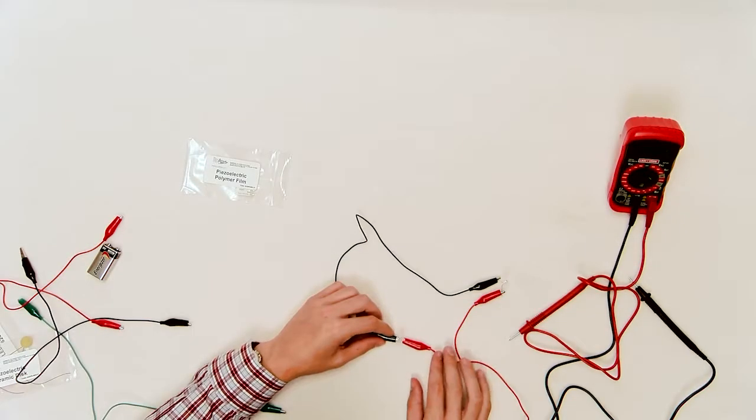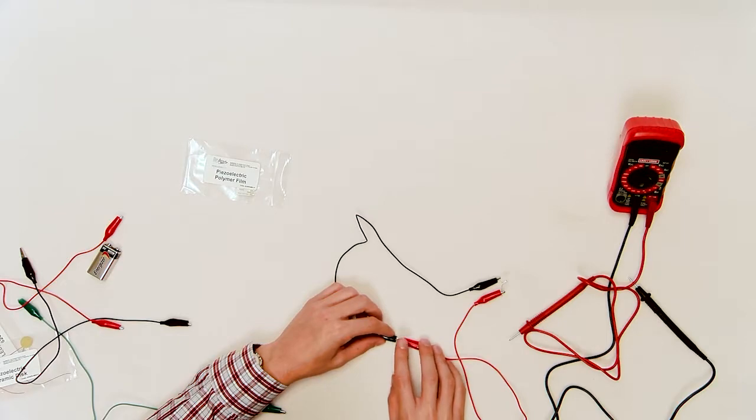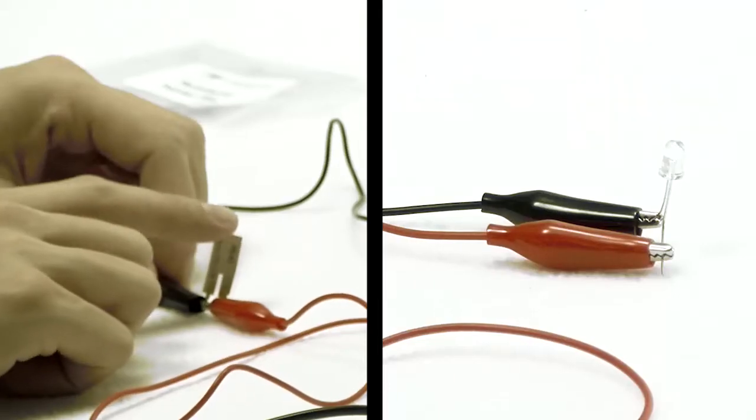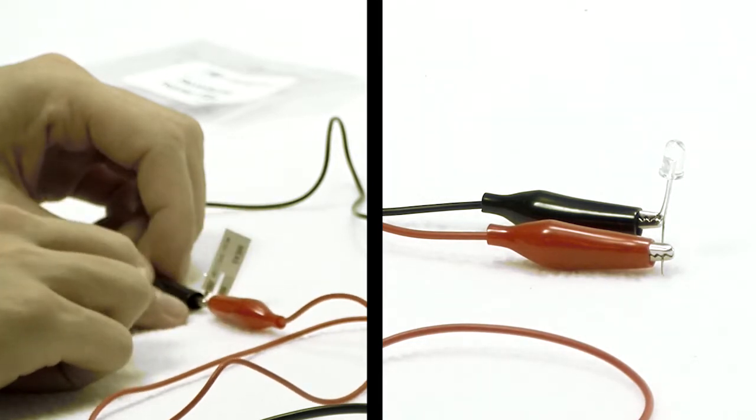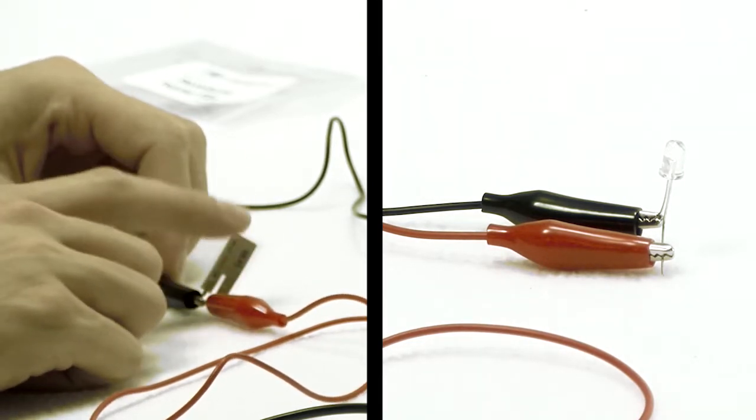Then bend the polymer film back and forth slowly. Increase the speed at which you are bending the material until the LED lights up with each bending motion. Again, the room must be fairly dark to see the LED light. The LED light flash has been enhanced for this video.